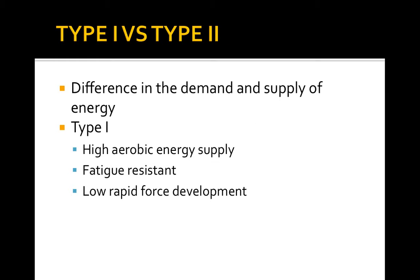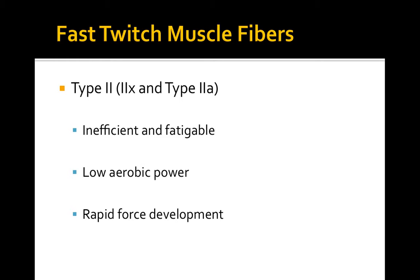The biggest difference between the two is the demand and supply of energy. Type 1 has a high aerobic energy supply and is more resistant to fatigue for longer durations, though intensity won't be as high — the higher the intensity, the faster you deplete those energy stores. Type 2 fibers are more easily fatigued; you can only do a sprint for 10 to 200 meters before you start to feel yourself fatiguing out.